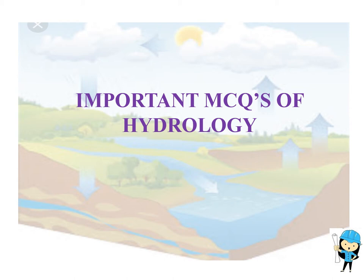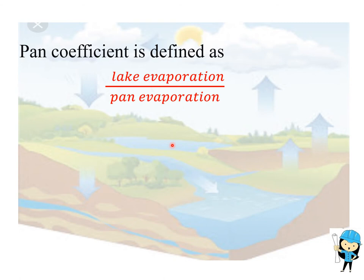The first question is: Pan coefficient is defined as the ratio of lake evaporation to pan evaporation. It is always less than 1. Lake evaporation is also known as the depth of evaporation.